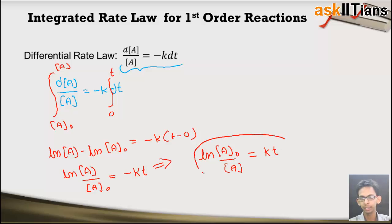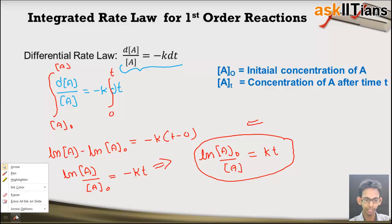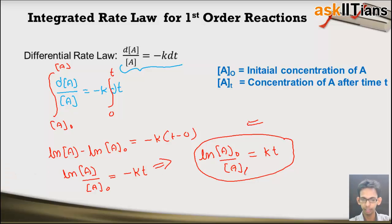This is the integrated rate law for first order reactions: ln(A0/A) equals kT, where A0 is the initial concentration of A and AT is the concentration of A at time T.